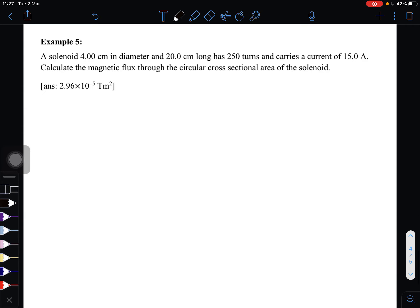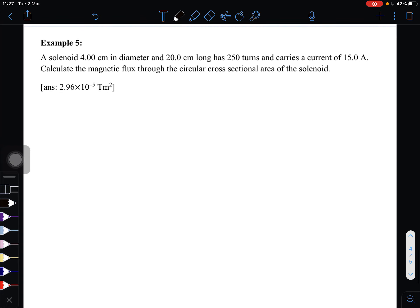Okay, so now Example 5. A solenoid 4.00 cm in diameter and 20.0 cm long has 250 turns and carries a current of 15.0 A. Calculate the magnetic flux through the circular cross-sectional area of the solenoid.